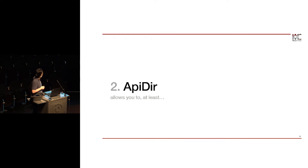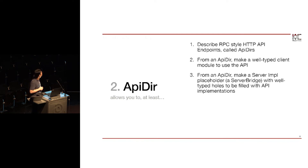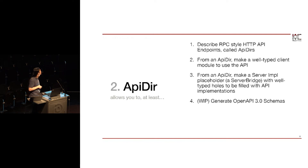Let's have a look at API directory. With API directory, we're able to describe RPC-style HTTP API endpoints — we call them API directories. From an API directory, we can make a well-typed client module to use that API, as well as a server implementation placeholder — what we call a server bridge — with well-typed hooks to be filled with API implementations. We could also generate OpenAPI 3.0 schemas from that, though that's still work in progress.